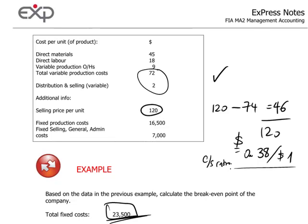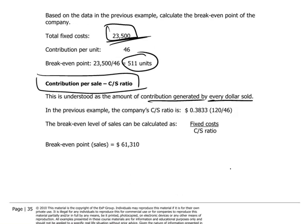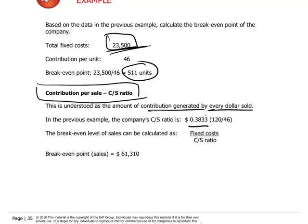The reason why this is useful is that the break-even level of sales — the revenue corresponding to the break-even level — can be calculated. The formula is to take our fixed cost of $23,500 and divide it by the CS ratio of 0.3833, which gives us a break-even point expressed in sales of $61,310.